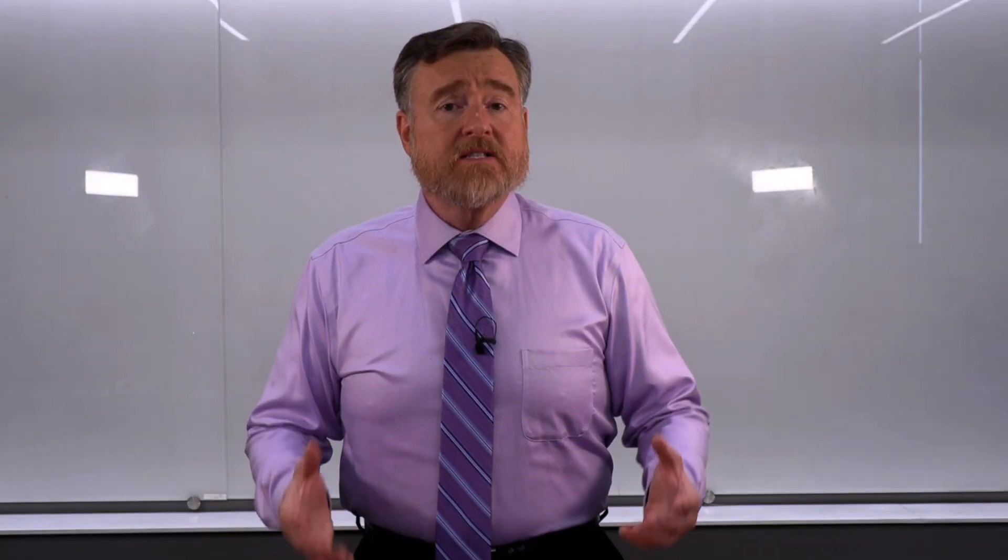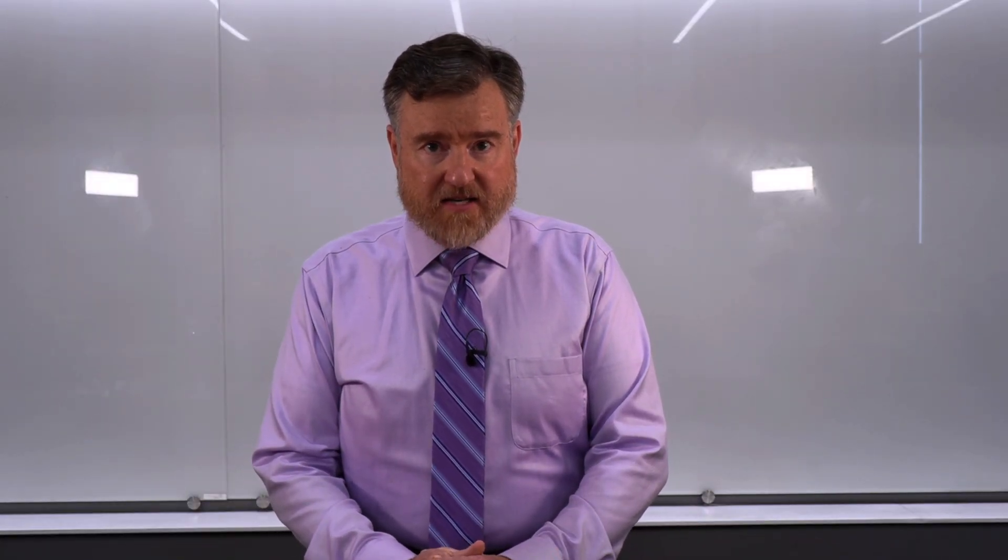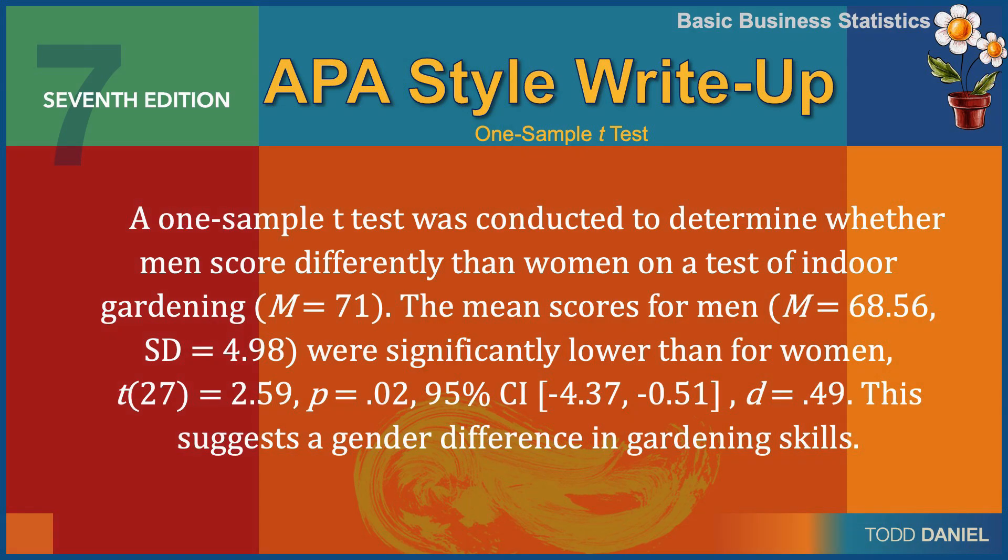And here is an example of how we might write up our findings in APA style. A one-sample t-test was conducted to determine whether men score differently than women on a test of indoor gardening, the population mean being 71. The mean scores for men were 68.56, with a standard deviation of 4.98.